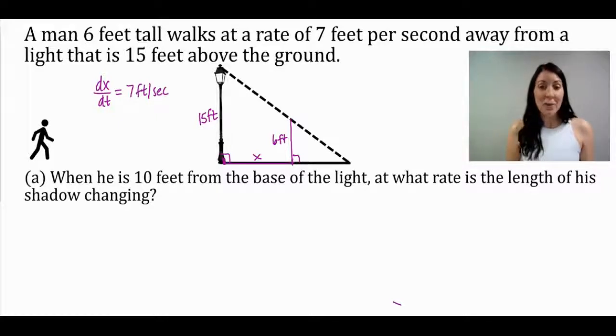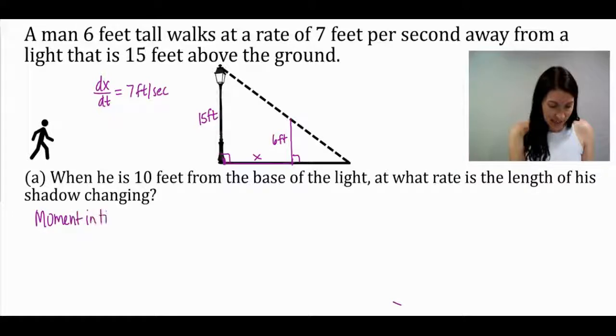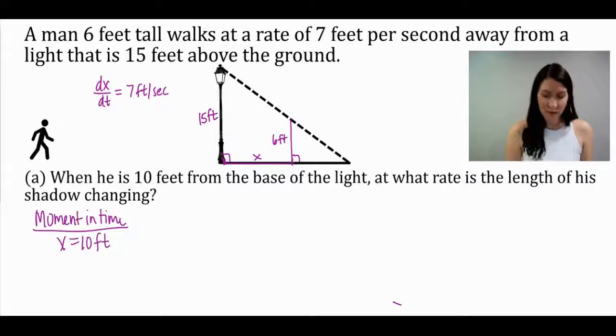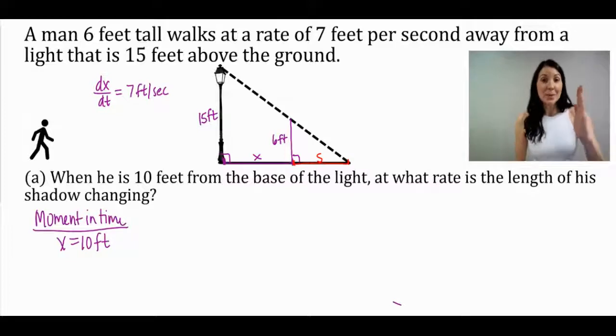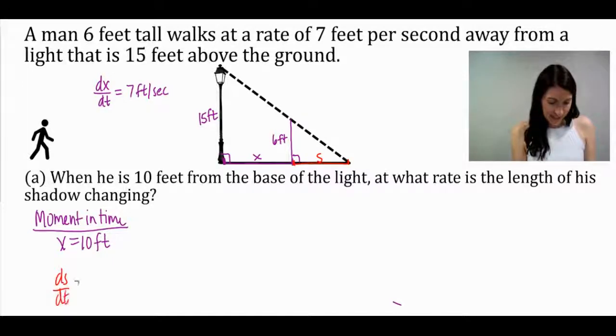It says when he is 10 feet from the base of the light, at what rate is the length of his shadow changing? So when he is 10 feet from the base of the light, that is a moment in time information, when the distance x is 10 feet. At what rate is the length of his shadow changing? Shadow would be from here to the end. I'm going to label that as s for shadow. That's because as the light shines along the man, the shadow would be reflecting behind him. We are looking for ds/dt in this problem.